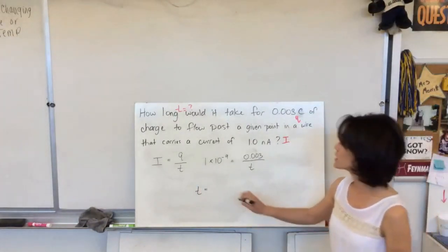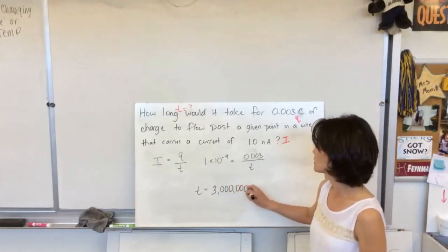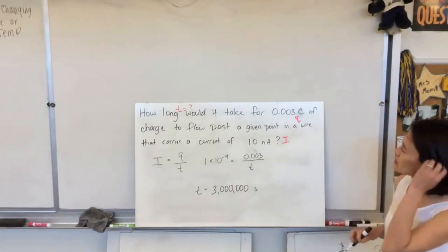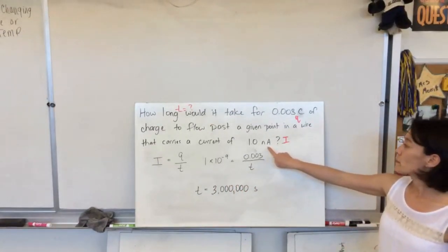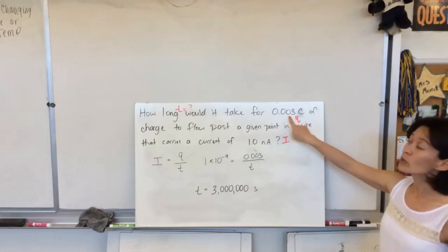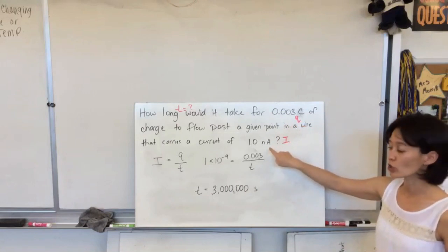And when you calculate that out, the time, it's a really big amount of time. It's 3 million seconds. And that's just to kind of give you an idea, because that's a pretty small current, one nanoamp. But 0.003 coulombs is a big amount of charge. That's a lot of charge that we're waiting to go by for such a small current.